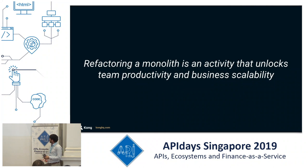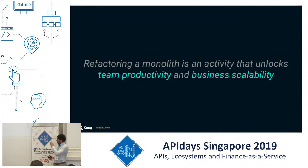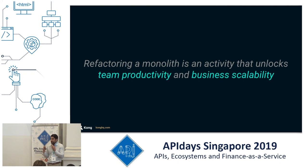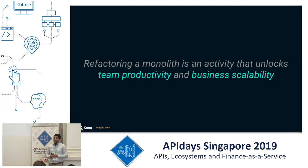Refactoring a monolith is an activity that unlocks team productivity and business scalability. If the transformation we're doing does not do that, it means we're failing at it. The key words are team productivity and business scalability. We're blowing up the monolith because we want to make our teams more productive, create products faster, innovate faster, and as a result, unlock new business cases. If the changes we're going to be doing are not within this purpose, then it's an academic project — not a business project.